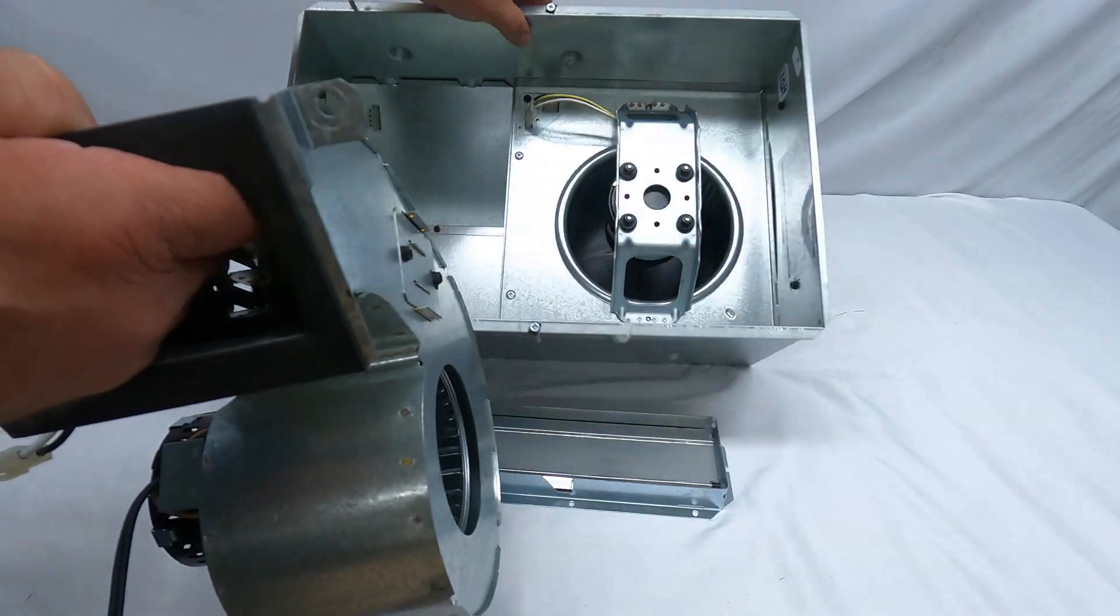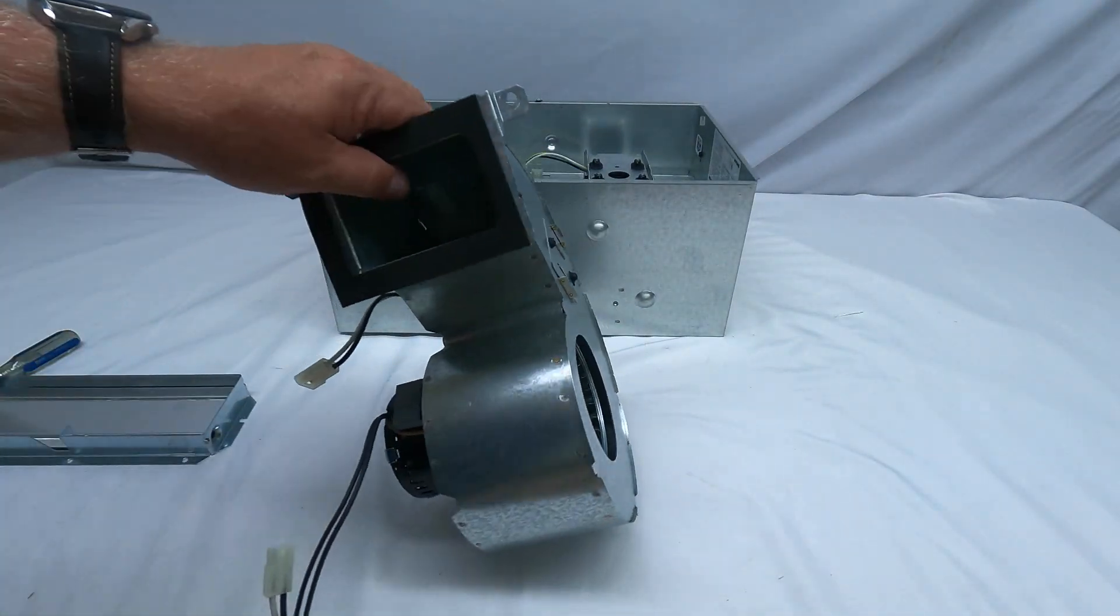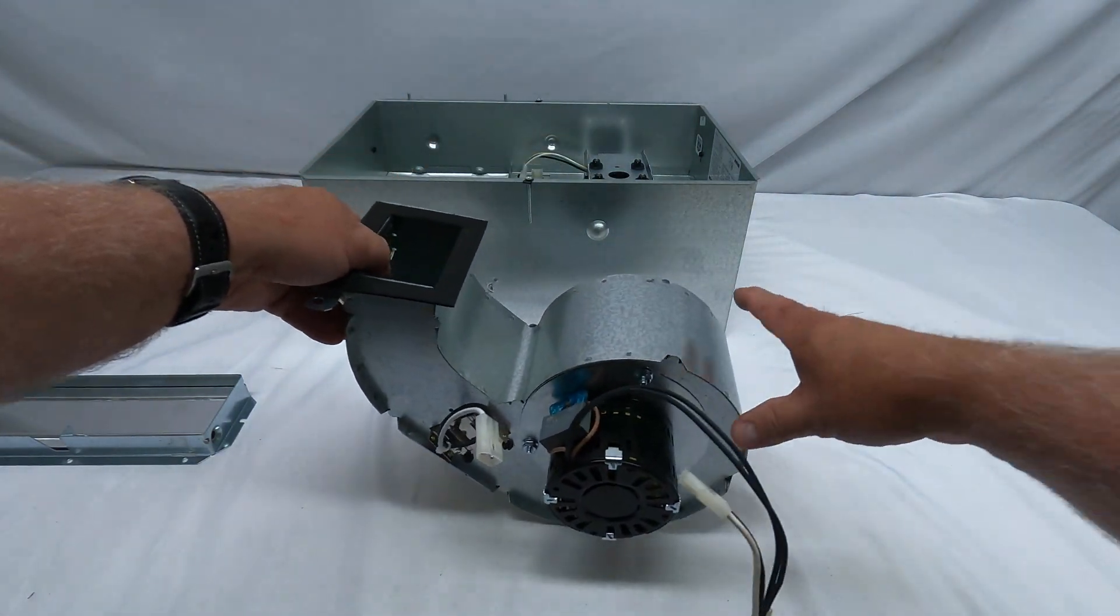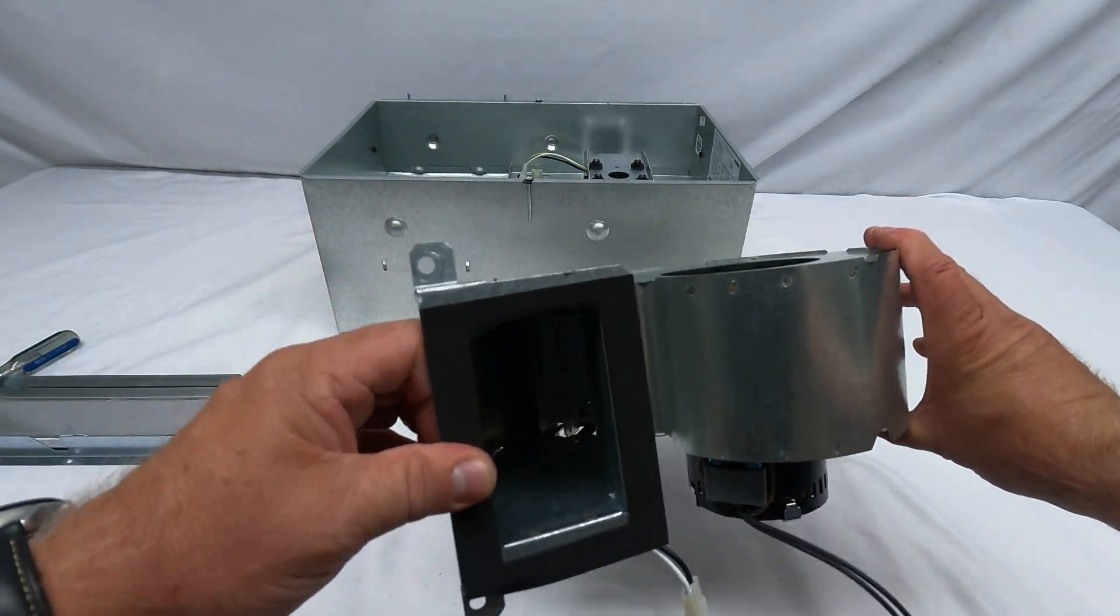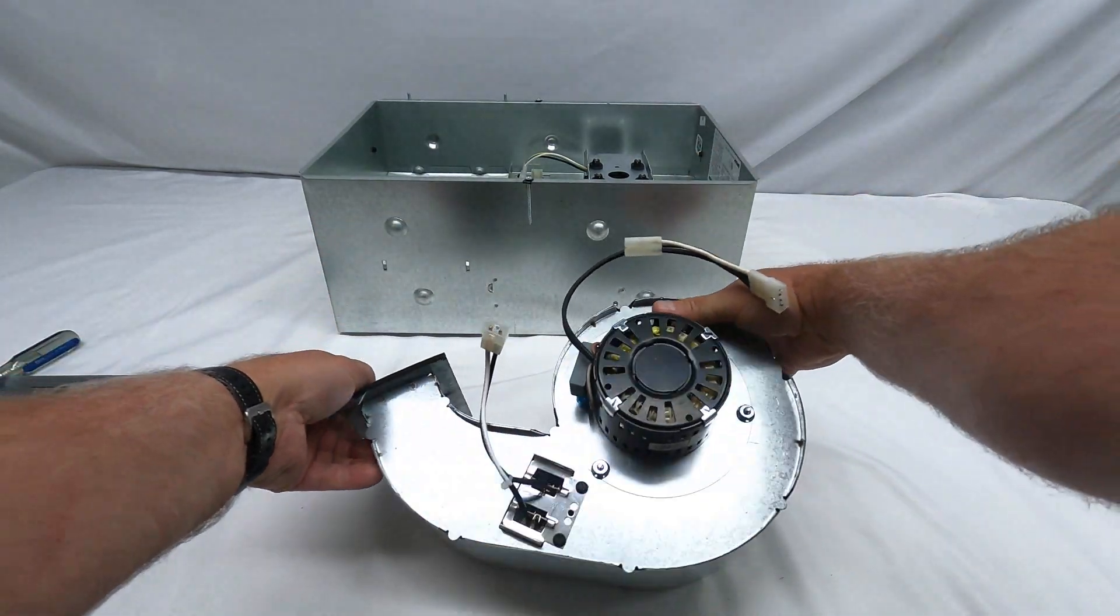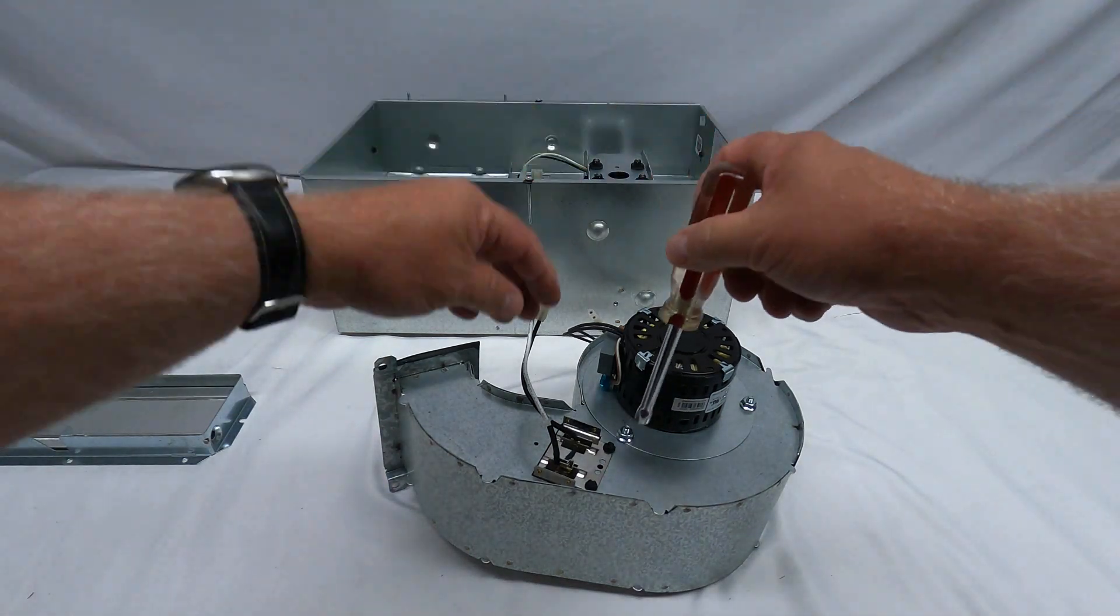Now I'm going to go ahead and just remove this housing here so we can take a look at it. So the heating assembly, once it's removed, this is the heating coil you can see on the inside of that unit. There's two screws here that we're going to remove.